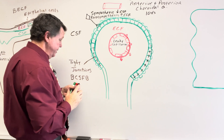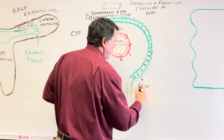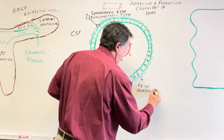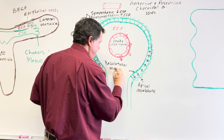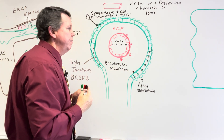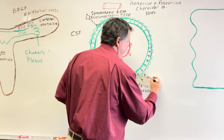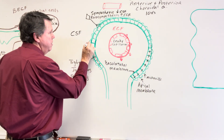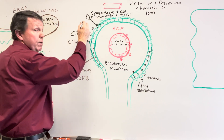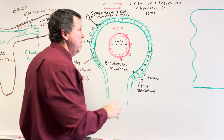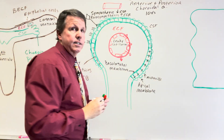These cells are going to have microvilli. The part facing the CSF is called the apical membrane, and the part facing the extracellular space is the basolateral membrane. The cells also have cilia, and those cilia help move the cerebrospinal fluid. Now let's talk about how we go from here into where the CSF is and how we actually make cerebrospinal fluid.